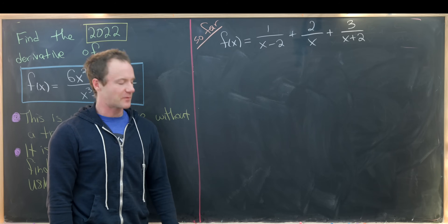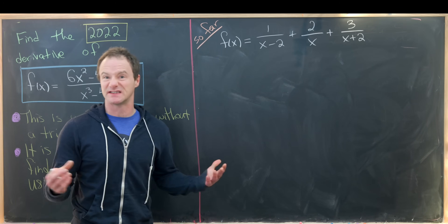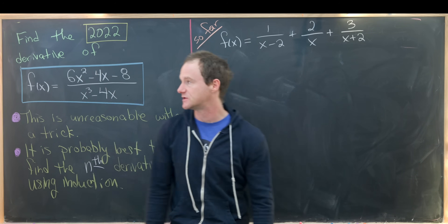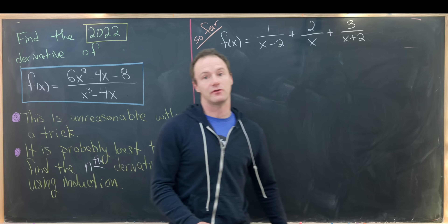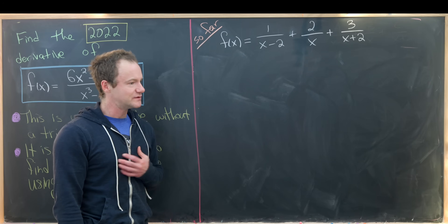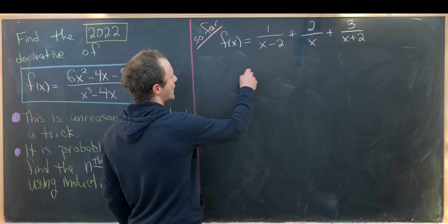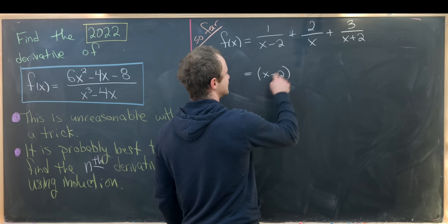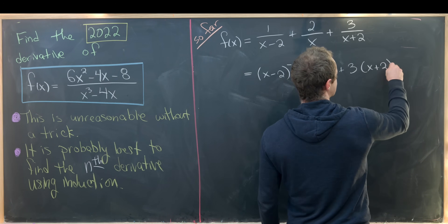We've used partial fraction decomposition to rewrite f(x) as 1 over (x minus 2) plus 2 over x plus 3 over (x plus 2). Our goal is to find the 2022nd derivative via finding the arbitrary nth derivative. A better way to write this uses negative exponents: (x minus 2) to the negative 1 plus 2 times x to the negative 1 plus 3 times (x plus 2) to the negative 1, so we can apply the power rule easily.